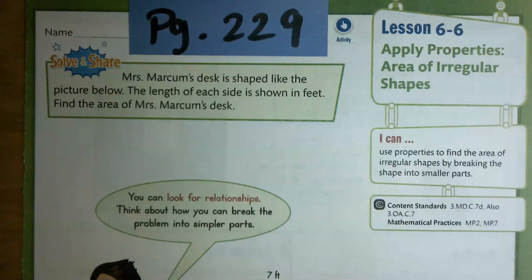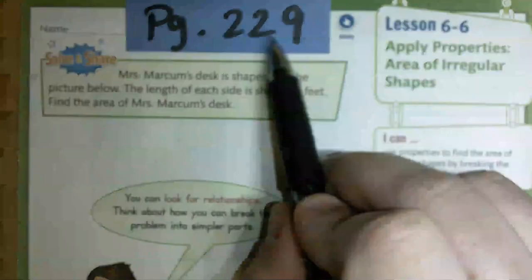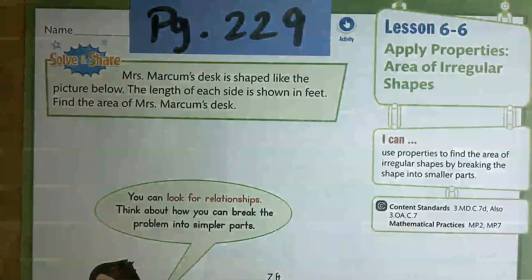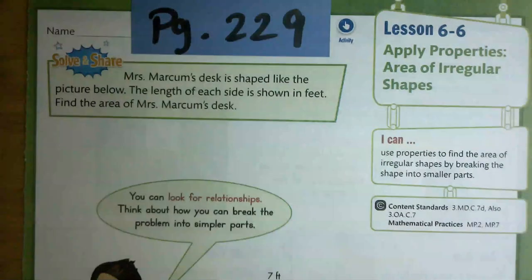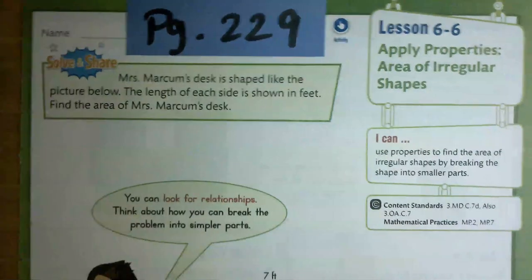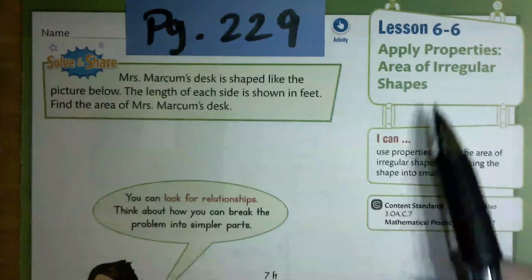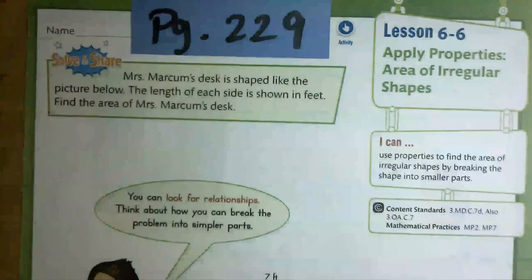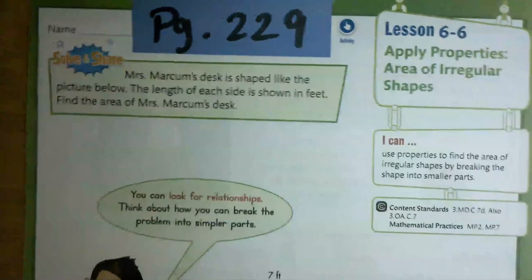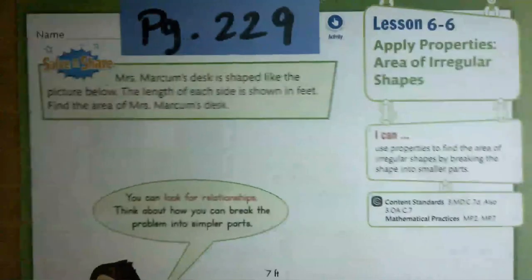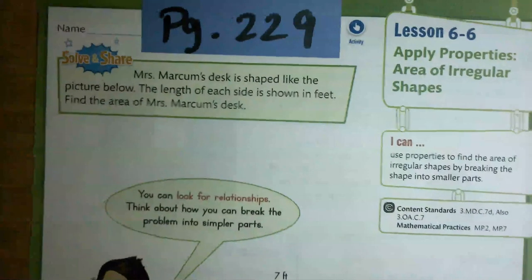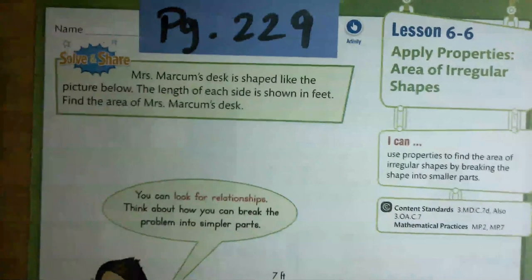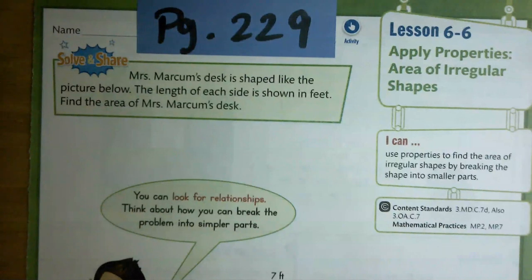Hey there, third grade, this is Mr. Campbell. We're going to get started today on page 229, and this is going to be lesson 6.6: Apply Properties - Areas of Irregular Shapes. At the end of today we want you to be able to say: I can use properties to find the area of irregular shapes by breaking the shape into smaller parts.